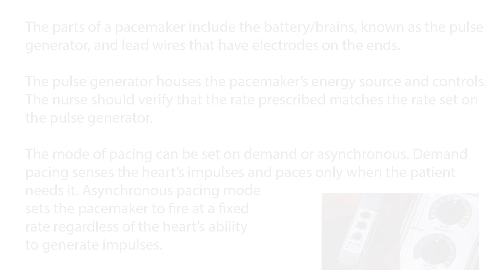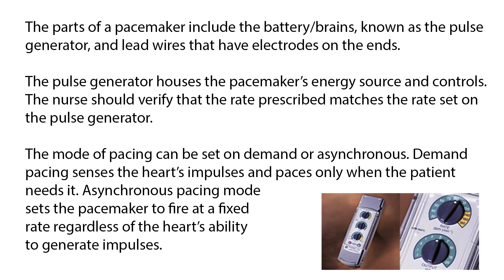The parts of a pacemaker include the battery or brains, known as the pulse generator, and lead wires that have electrodes on the ends. The pulse generator houses the pacemaker's energy source and controls. The nurse should verify that the rate prescribed matches the rate set on the pulse generator. The mode of pacing can be set on demand or asynchronous. Demand pacing senses the heart's impulses and paces only when the patient needs it. Asynchronous pacing mode sets the pacemaker to fire at a fixed rate regardless of the heart's ability to generate impulses.